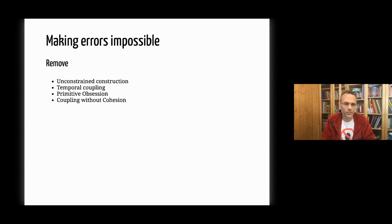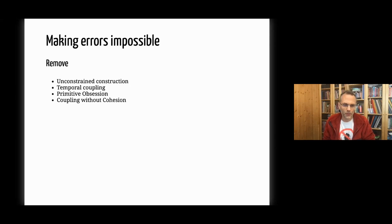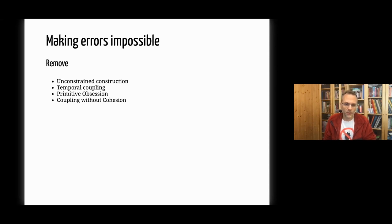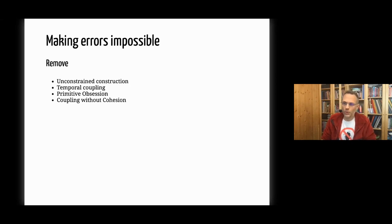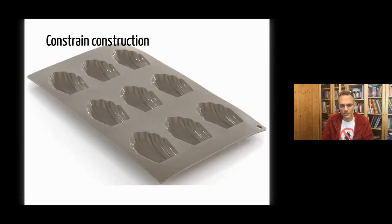We'd also like to remove primitive obsession, another source of bugs. If we can't make problems impossible, we can address places where we have coupling without cohesion. Coupling means two parts of the code must change together when one changes. Cohesion means those things are close together so it becomes easy to change them at the same time.